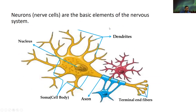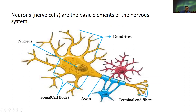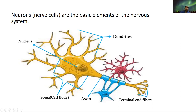The nerve cells are the basic elements of the nervous system. The nerve cells are called neurons. A neuron consists of one nucleus, some dendrites, and it also has an axon and terminal end fibers. These are the basic structures of the nerve cells.